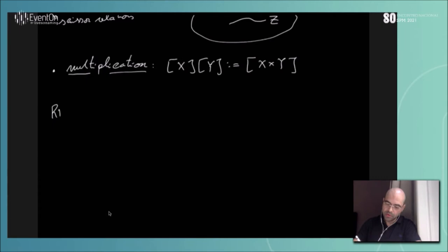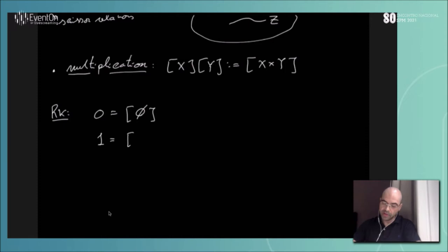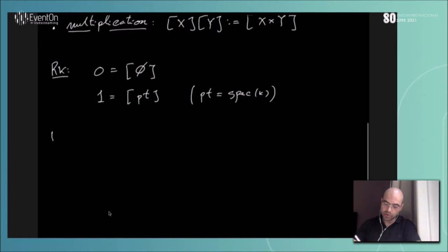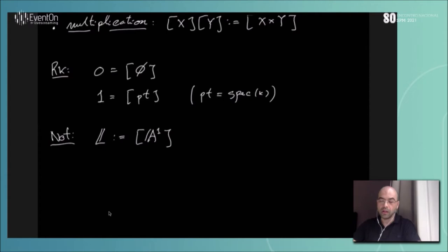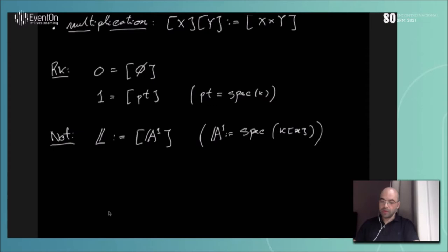Some remarks: the zero of this ring is the Grothendieck class of the empty variety; the multiplicative unity is the Grothendieck class of a point, meaning Spec(k). One important element is L, the Grothendieck class of the affine line A¹ = Spec(k[t]).